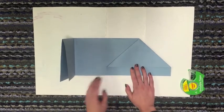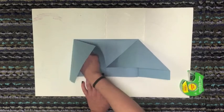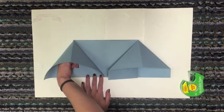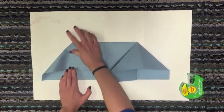You're going to do the same thing with the other side. Open the flap, put your finger into the corner, push it over, put the middle ridge down, make it a house.